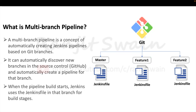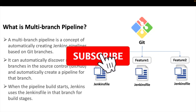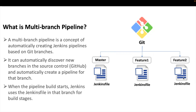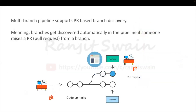For a given feature branch, the Jenkinsfile of that particular feature branch will be used. For example, if we are going to build for feature 2, then the feature 2 Jenkinsfile will be used. Multi-branch pipeline also supports PR-based branch discovery, meaning branches get discovered automatically in the pipeline if someone raises a pull request from a branch in GitHub.